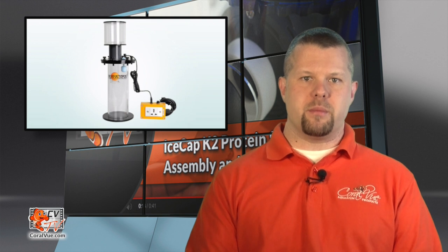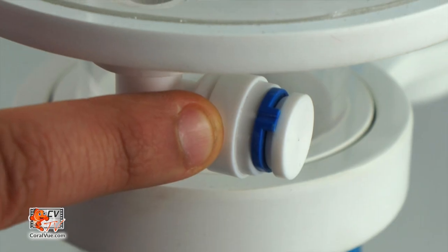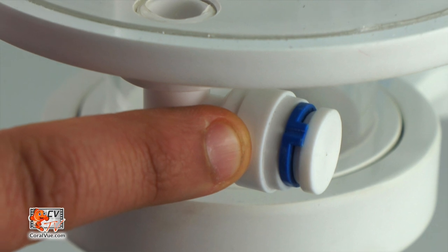The collection cup comes with a drain if you wish to run the skimmer to a collection container. To do this, remove the blue retainer clip by pulling outward.